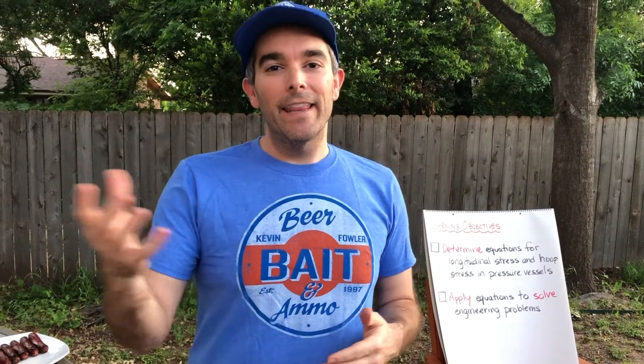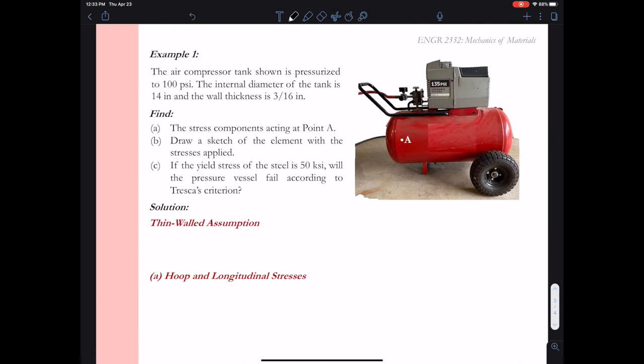Let's take a look at this example. We're going to analyze an air compressor tank as a pressure vessel and measure the stresses in that piece of equipment at a certain pressure. In this example, we're going to compress the air in the tank up to a pressure of 100 psi. The internal diameter of the tank is 14 inches and the wall thickness is 3/16ths of an inch.